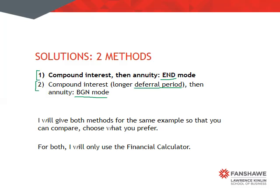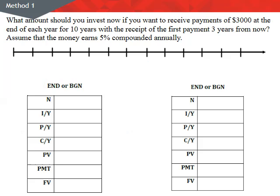I will be using the financial calculator to do these calculations, and I need to set up the tables just like you're given on your tests. Let's begin with method one. I'm going to start by setting up my timeline so that I can organize my thinking and set up my tables correctly. Reading through the question, we're trying to find what we should invest now, so I'm going to start my timeline with now being time zero.